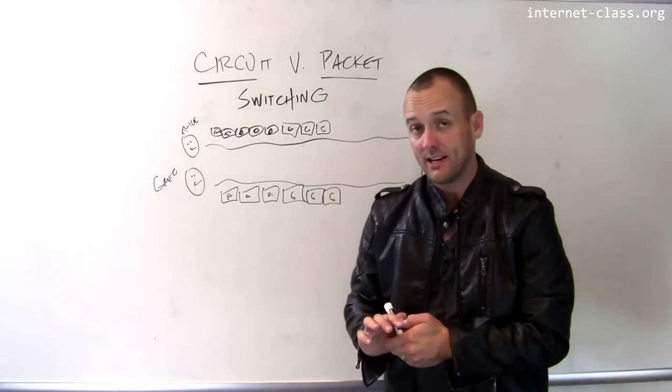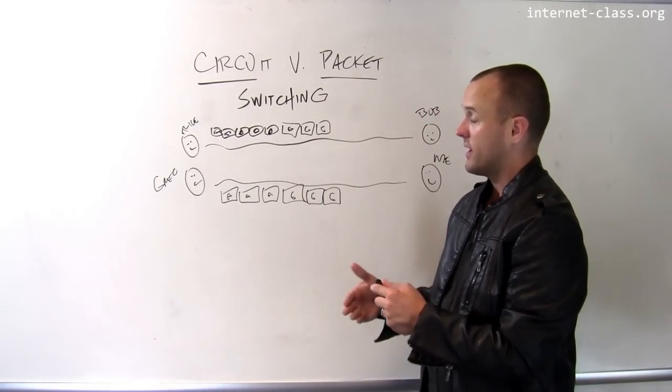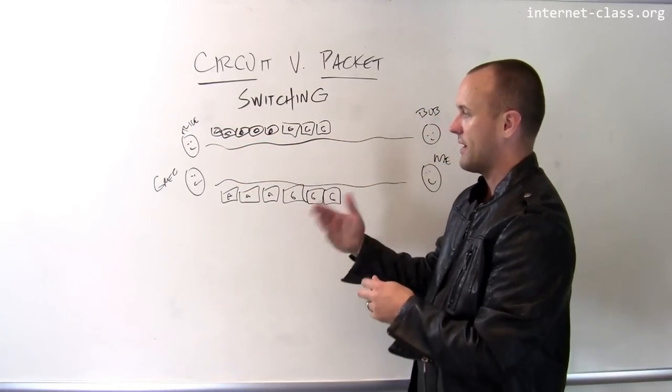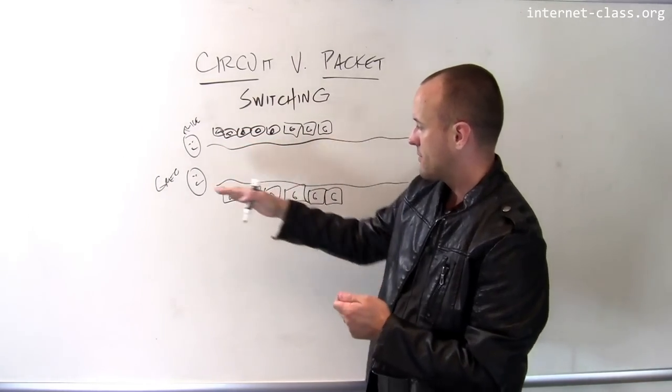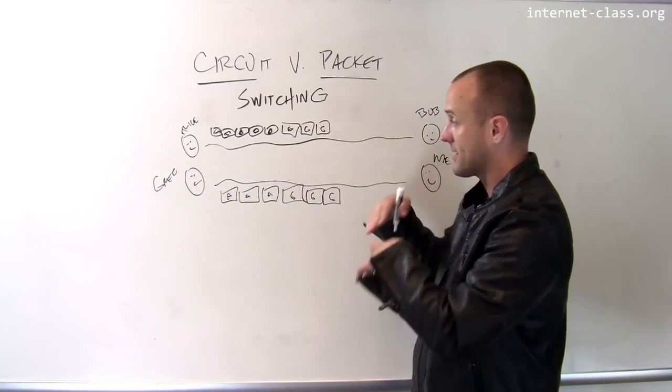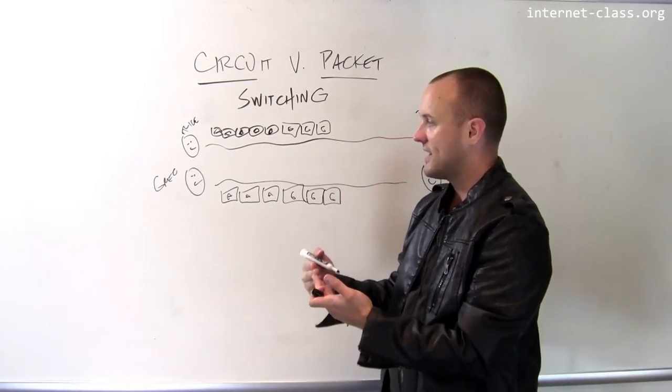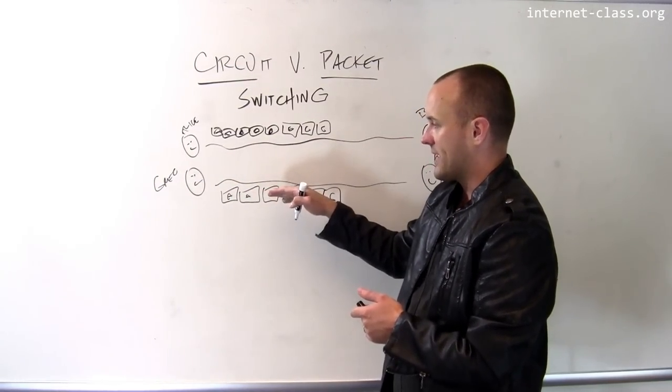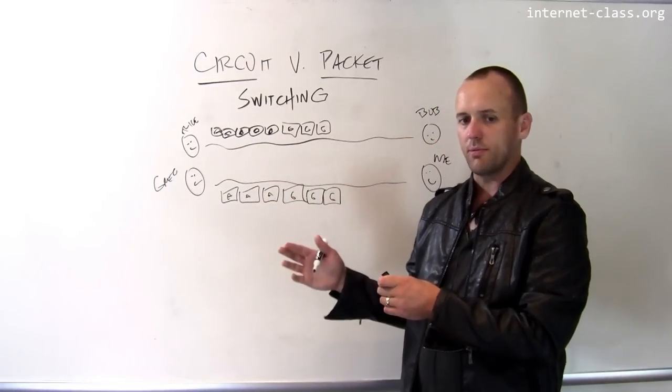The ability to packetize this type of communication is also really important when we start talking about bursty data, like when people use the internet. When Greg and Alice are using the internet to browse websites, that doesn't create a lot of continuous traffic like me talking does. That contains little bursts of traffic. You go to a website and it generates a little burst of packets, then you go to another website and it generates a little burst of packets.